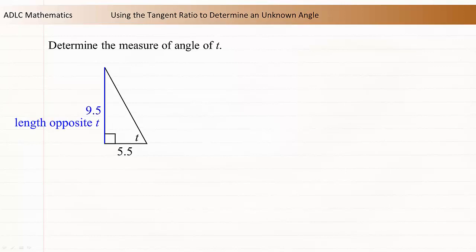The side that is 9.5 units long is opposite angle t because neither of its ends touch t. The side that is 5.5 units long is adjacent to angle t because one side touches angle t and is not the hypotenuse.